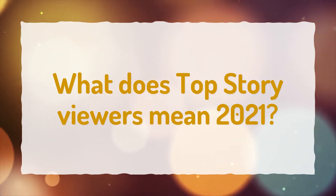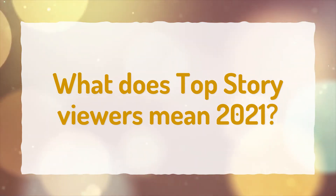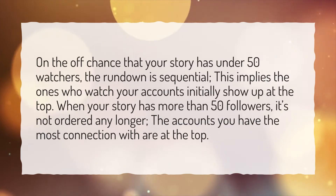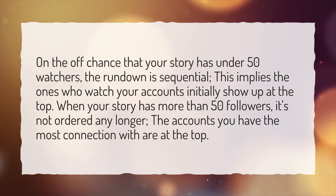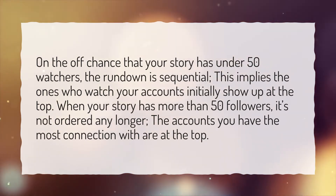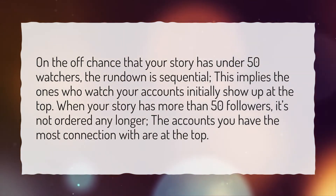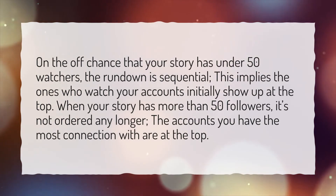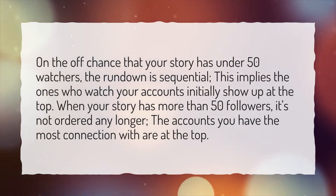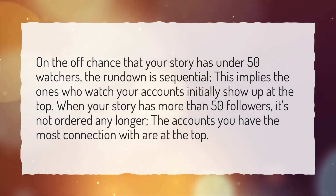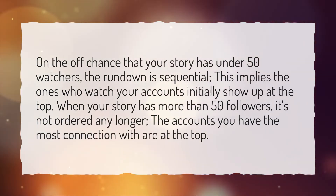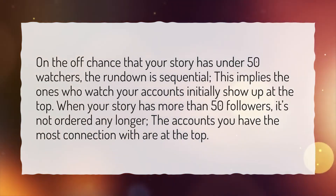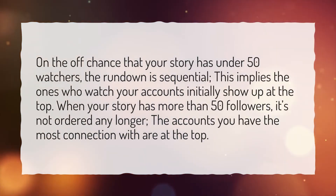What does top story viewers mean 2021? If your story has under 50 viewers, the list is chronological — the ones who watch your story first appear at the top. When your story has more than 50 viewers, it's no longer ordered chronologically. Instead, the accounts you have the most connection with appear at the top.